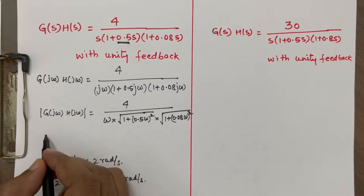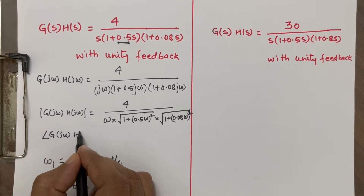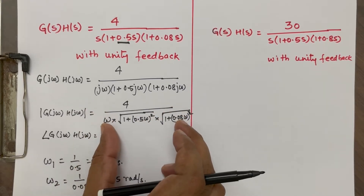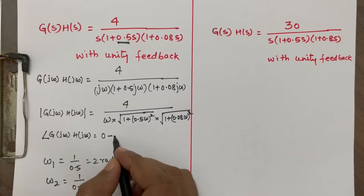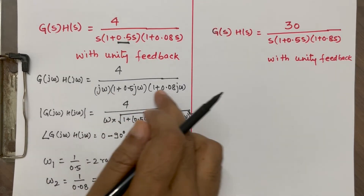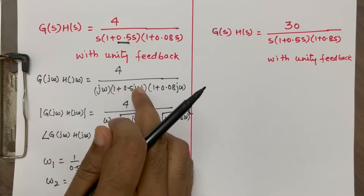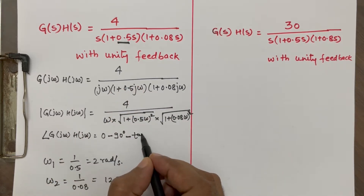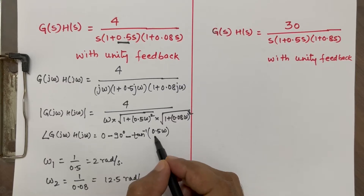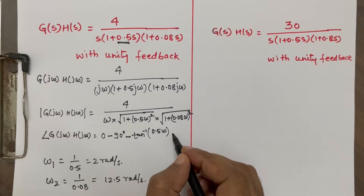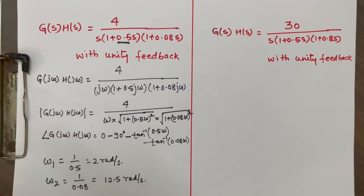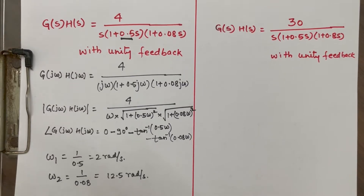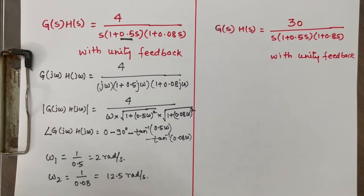The phase of this function is numerator phase minus denominator phase. The numerator phase is 0. For the denominator: jω contributes −90°, then we subtract tan⁻¹(0.5ω) for the first term and tan⁻¹(0.08ω) for the second term. Based on these calculations, we will find the gain crossover frequency and phase crossover frequency. Just follow the steps in the calculator.